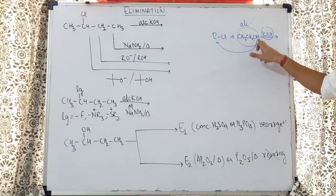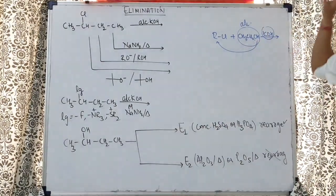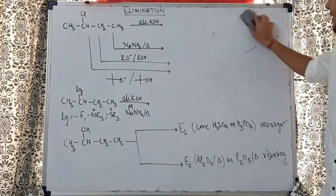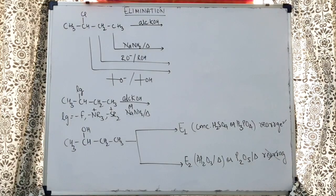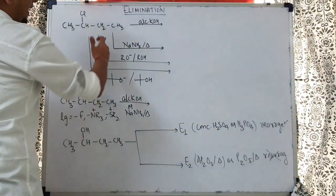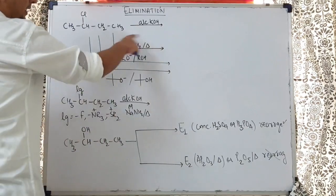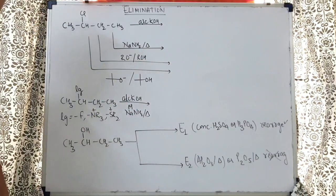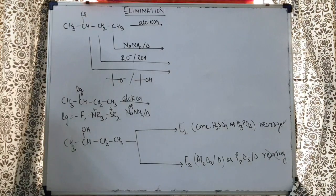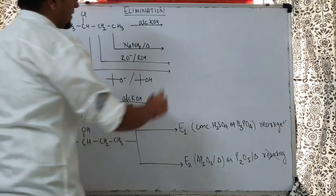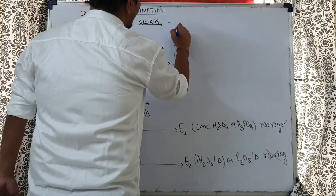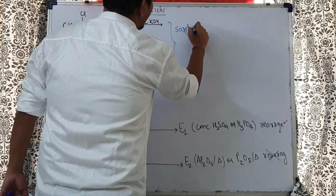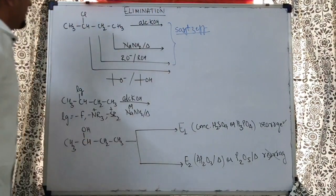Understand: if you have alcoholic KOH, or if you have CH3CH2OH with KOH written on the arrow, in both cases you are going to get the elimination reaction and the product is going to be an alkene. When you have alcoholic KOH, NaNH2 with heat, or RO⁻ in the presence of ROH — for example C2H5O⁻ in the presence of C2H5OH — in these three cases you are going to get E2 mechanism majorly, and the product is the Saytzeff product.